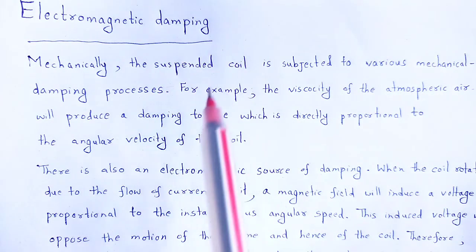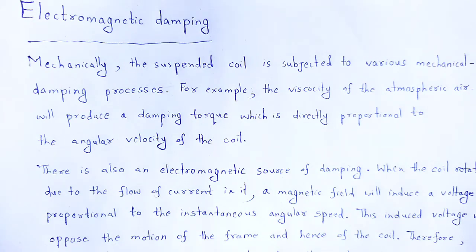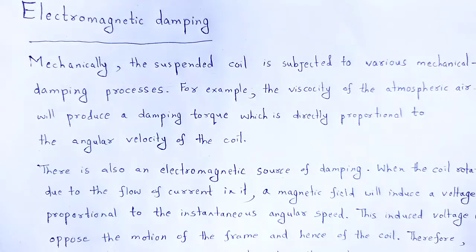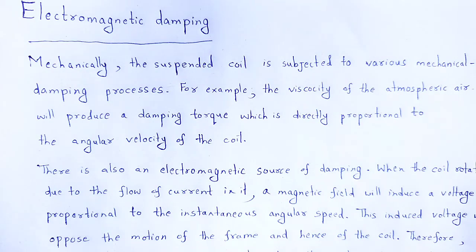Electromagnetic damping. In case of a ballistic galvanometer, when a coil is placed in between the permanent magnets, the coil experiences a magnetic torque when current is passed. External factors are responsible to overcome that torque.